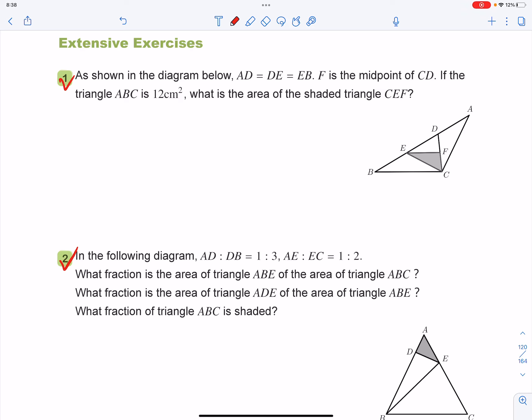Extensive exercises, question number one. As shown in the diagram below, AD equals to DE equals to EB. So the ratio of those three line segments is 1 to 1 to 1. And F is the midpoint of CD.